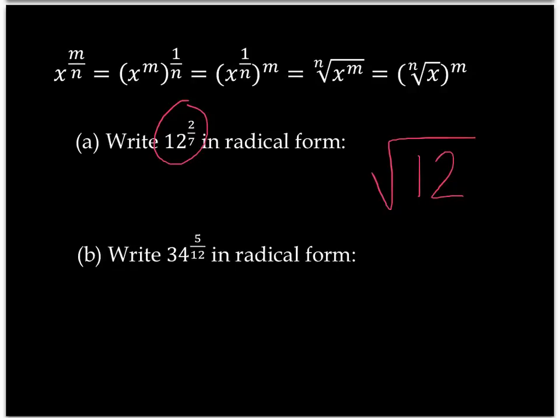The index of the radical, the little number out front, is 7. And finally, the exponent is 2. So, what this is saying is it's the seventh root of 12 to the power of 2. I'd like you to take a moment right here to pause and attempt question B. So, pause now.